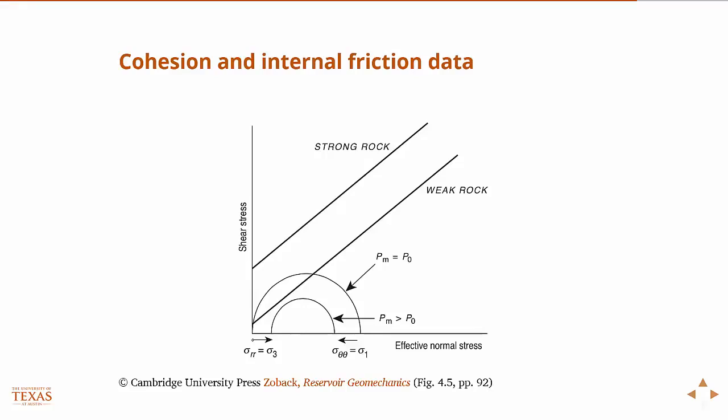The primary principal stress, S3, sigma 3, in the wellbore is sigma rr, which was equal to delta p, where delta p is the difference in the pressure in the wellbore and the pore pressure. And so, obviously, if you have a strong rock, this is the Mohr failure surface for a strong rock, and it doesn't matter. It's well above for either case.